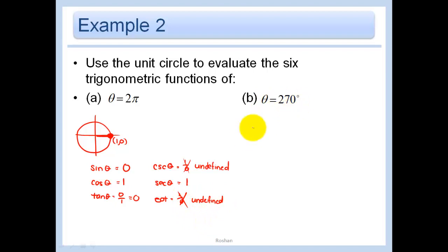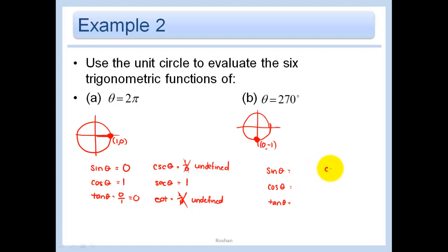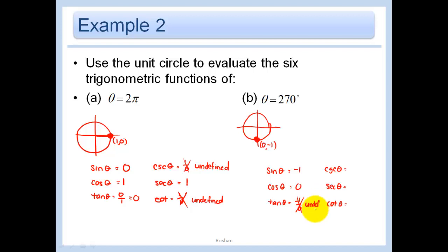Now let's look at 270 degrees. That's right down here on my unit circle, and the coordinate is (0, -1). So sine is the y-coordinate, or negative 1. Cosine is the x-coordinate, or 0. Tangent is negative 1 over 0, which is undefined. Cosecant: flip negative 1 over 1 to get negative 1. Secant: flip 0 over 1 to get 1 over 0 — undefined. Cotangent: flip negative 1 over 0 to get 0 over negative 1, so this is 0.